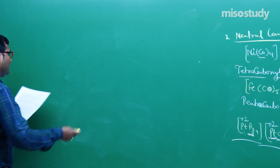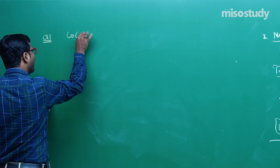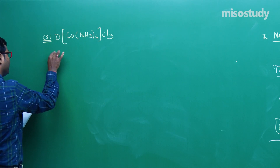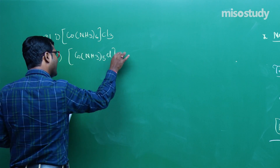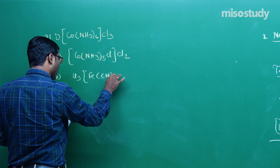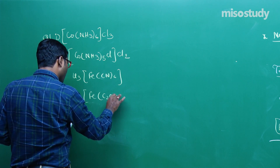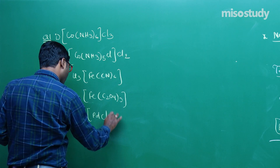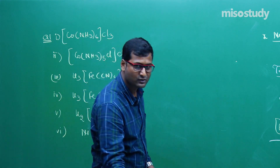Now practice questions. First: [Co(NH3)6]Cl3. Second: [Co(NH3)5Cl]Cl2. Third: K3[Fe(CN)6]. Fourth: K3[Fe(C2O4)3]. Fifth: K2[PdCl4]. Sixth: Ni(CO)4. You have to write down the name of these six, then we will decide the next ones.